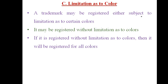Regarding limitations as to color: a trademark may be registered subject to limitations as to certain colors. For example, a trademark registered in red color only — others can register the same trademark with a different color, as it is restricted to red color only. However, if it is registered without limitations as to color, then nobody can register a similar trademark in different colors — it will be registered for all colors.